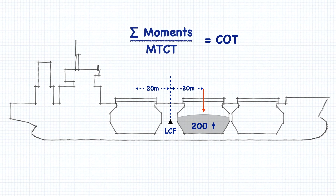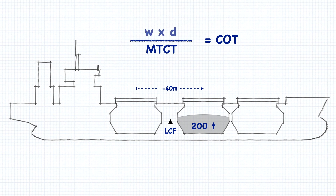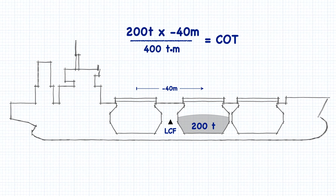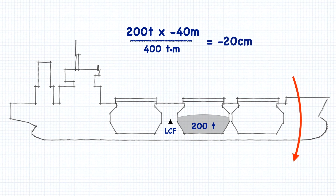The next would be to calculate only the shift in cargo using a slightly different formula. Since the cargo went from a position 20 meters aft of the center of flotation to a position 20 meters forward of the center of flotation, we could call that a shift of negative 40 meters, or 40 meters forward. In order to calculate the change of trim, it's the amount of weight shifted times the longitudinal distance over which it moved (the shift), divided by the moment to change trim one centimeter. In our case, 200 tons times a shift of negative 40 meters, divided by the moment to change trim, equals a change of trim of 20 centimeters by the head.